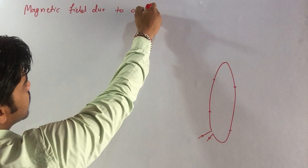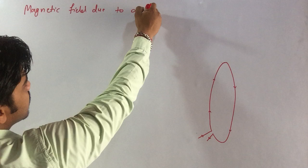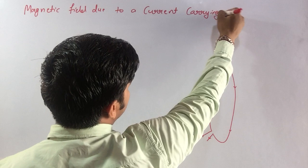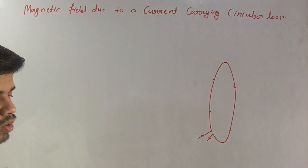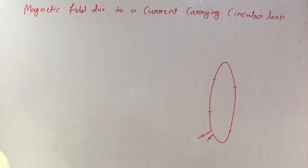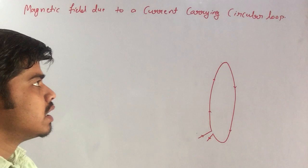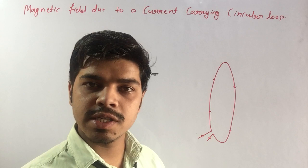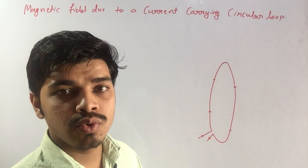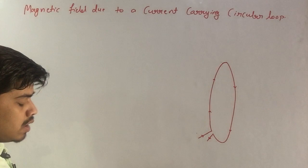Magnetic field due to a current carrying circular loop — this is a loop. We can say any circuit in which current is running. If we look at any current flow, the loop will be formed. Here the current is running; that's why I have called it a circular loop.